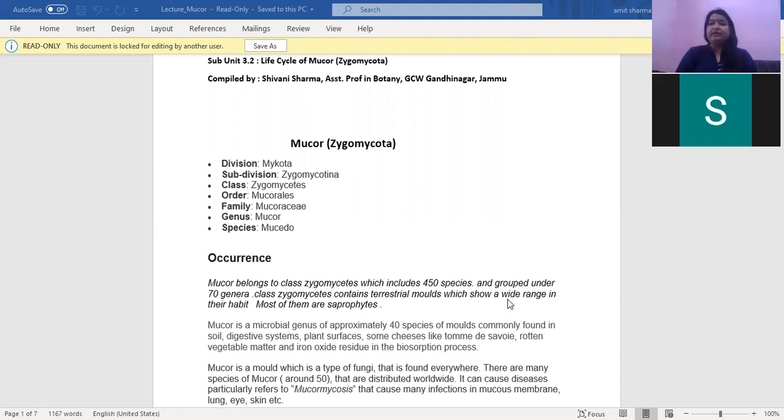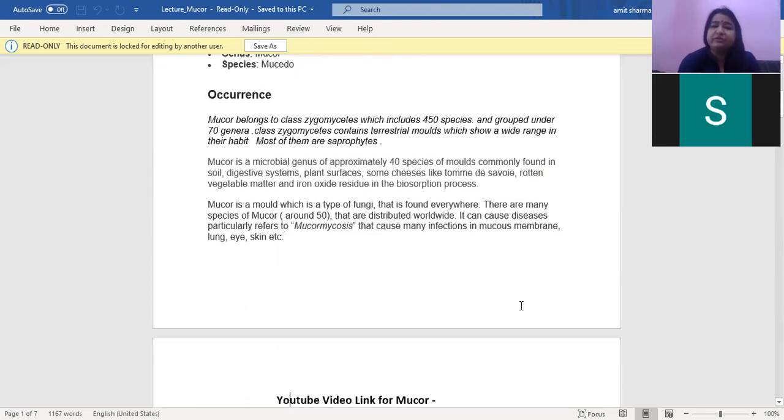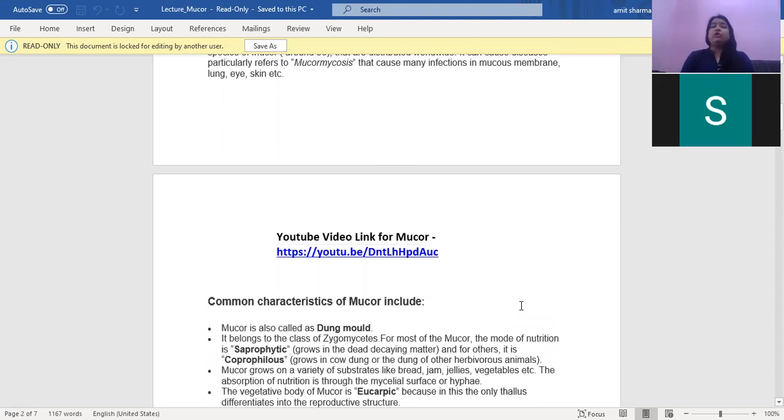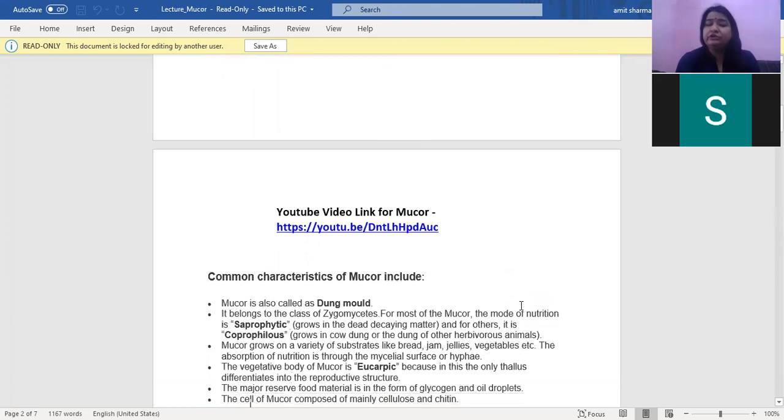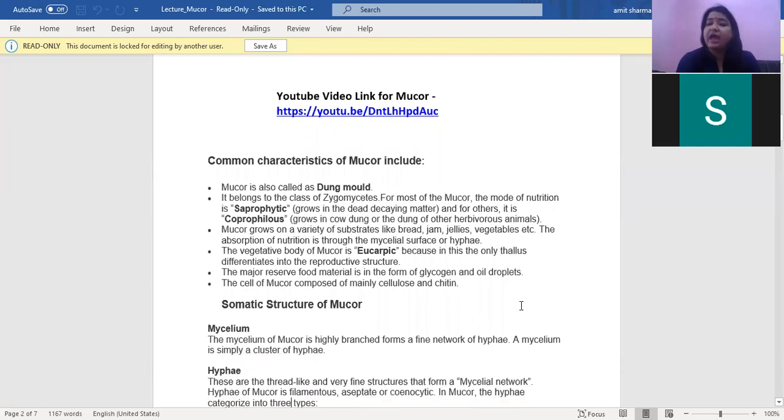There are about 450 species which are grouped under 70 genera. Class zygomycetes contain terrestrial molds which show a wide range of habitat. MUCR has about 40 species which are commonly found in soil, digestive system, plant surface, and cheese. MUCR is a mold which is a type of fungi found everywhere. It is also called dung mold. Though it is saprophytic, that is, it grows in dead decaying matter, it is also called coprophilous fungi, that is dung loving fungi. But it also grows in variety of other habitats like bread, jams, and jellies.